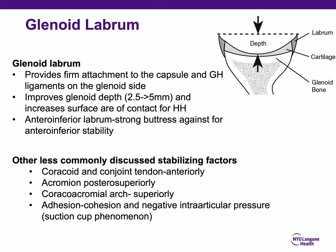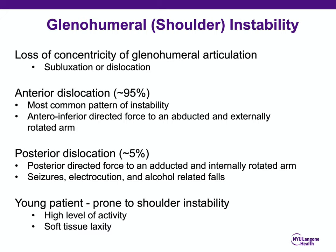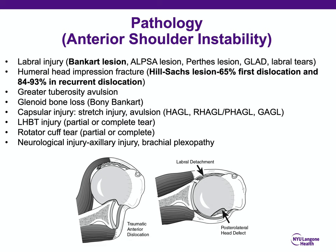Shoulder instability is defined as loss of concentricity of the glenohumeral articulation — it could be subluxation or dislocation. Anterior dislocation is more common than posterior, and young patients are more prone partly due to high activity level and soft tissue laxity. The Bancart lesion or its variant is still the essential lesion. Hill-Sax lesion is present in 65% of first dislocations and 84–93% of recurrent dislocations. Other pathologies include greater tuberosity fractures, bony Bancarts, capsular injuries, avulsions, long head of biceps or rotator cuff tears, and neurologic injuries.